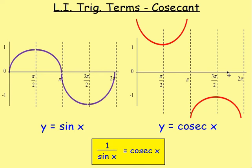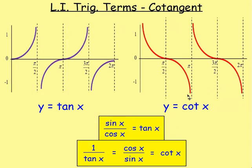Equally, if we have the graph of y equals sin x, and if you graph 1 over sin x, we call 1 over sin x cosec x. And finally, if you have the graph of tan x, you could then graph 1 over tan x. And we call 1 over tan x cot x.